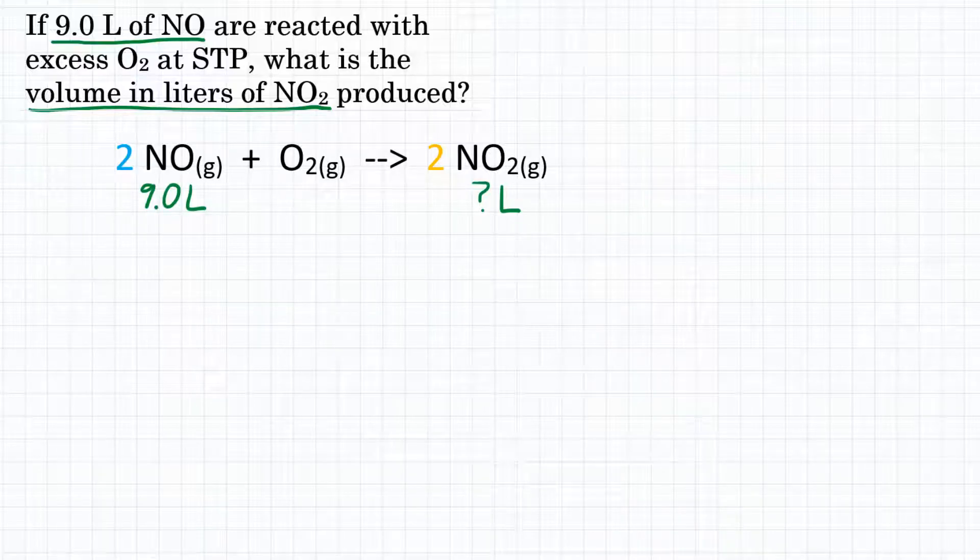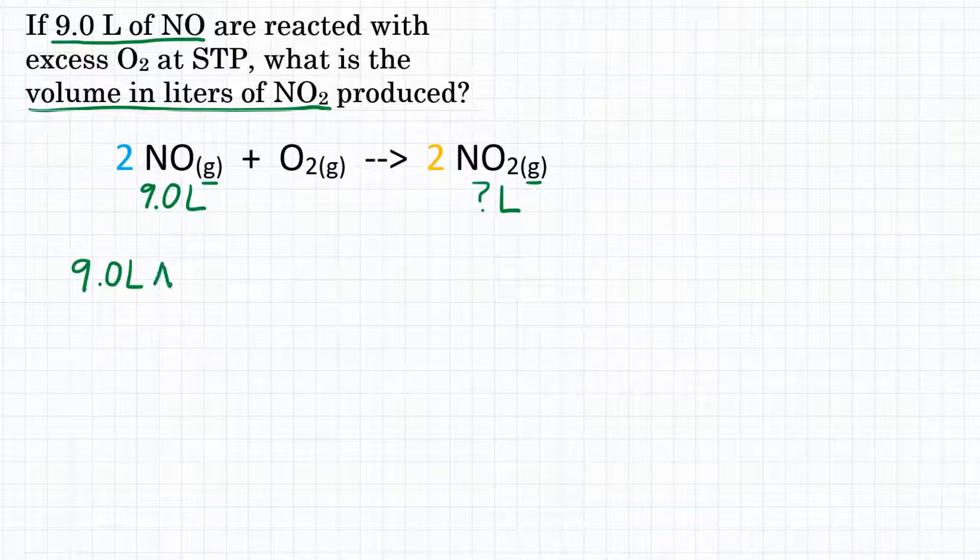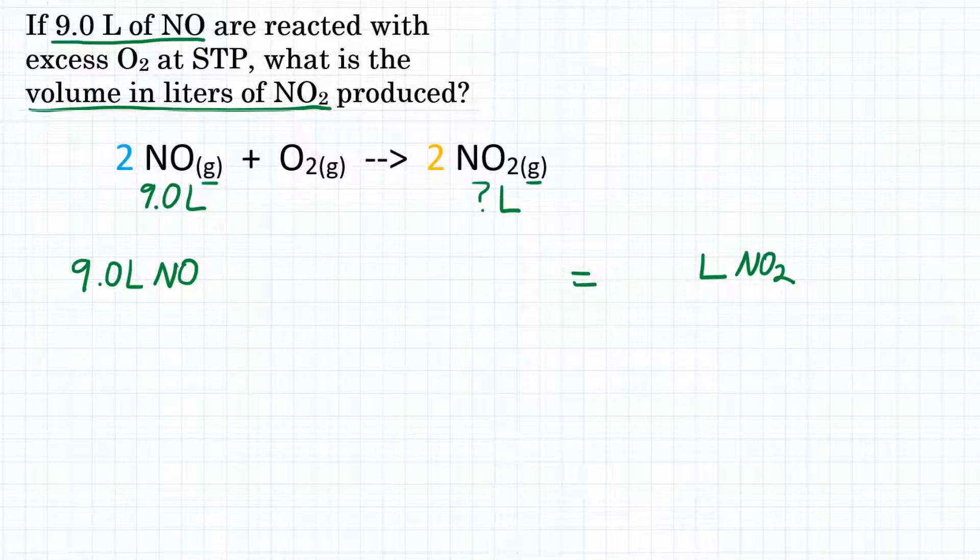From our information from the problem, we know this is a gas stoichiometry problem because we are dealing with one or more gases. That's what this little g here means next to some of our reactants or products in our chemical equation. So we can set up our regular stoichiometry, which going from liters to liters would take three steps.